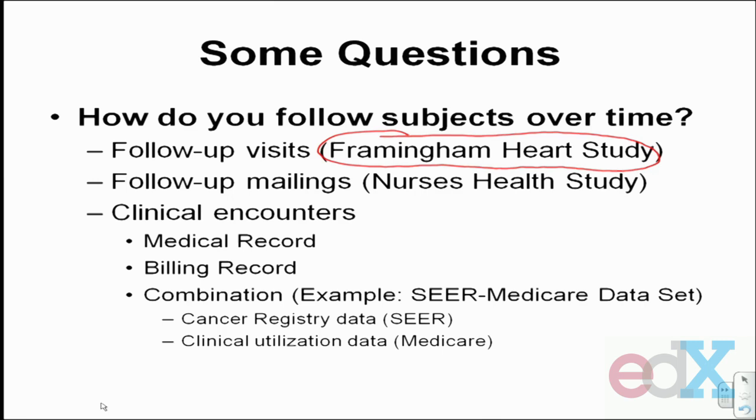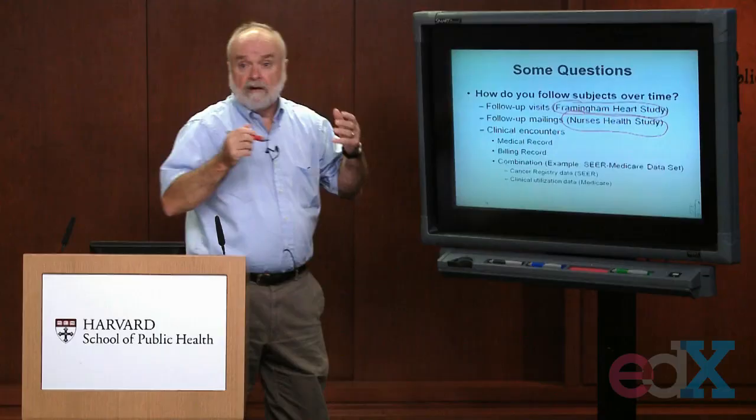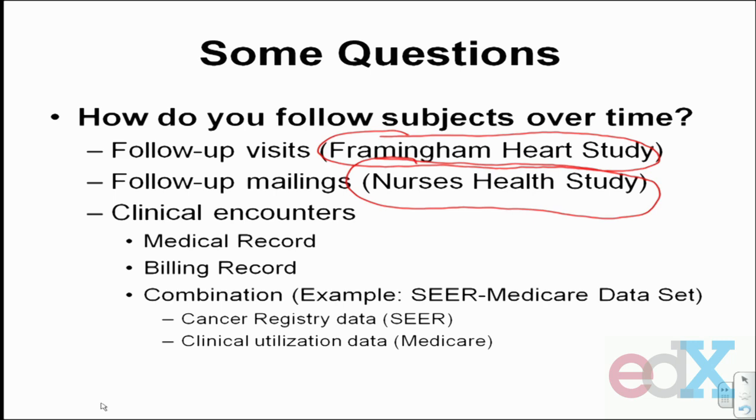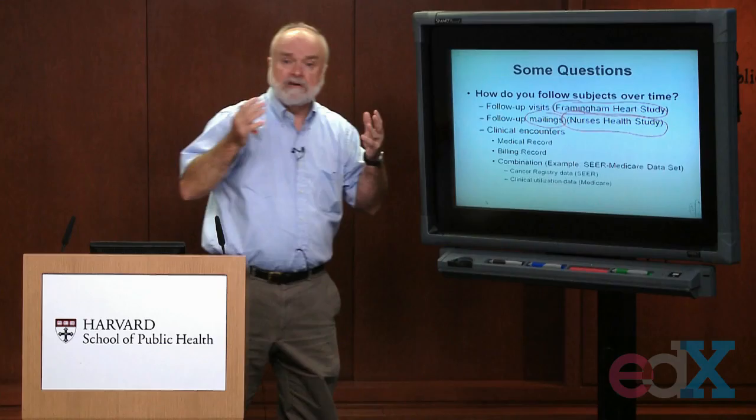Later on, you'll be hearing from the investigators of the Nurses' Health Study. They also wanted to update people's information every two years, but they did it by mailings — sending questionnaires to a large number of nurses. They started out with 120,000 nurses. You can't imagine trying to bring 120,000 people every two years to a site to be tested — that would probably not be feasible. But if you can get the information from mail responses to questionnaires, you can get useful information from a much larger cohort. That's why the Nurses' Health Study enrolled nurses, hoping they would correctly fill out and return the questionnaires.